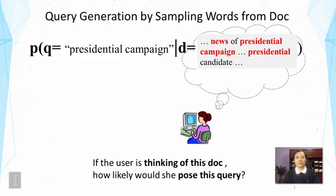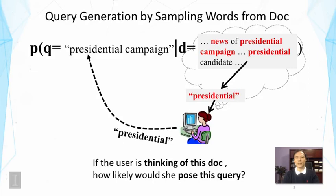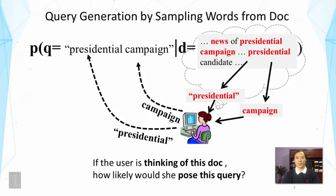For example, a user might pick a word like 'presidential' from this document and use it as a query word, then pick another word like 'campaign' as the second query word. This is an assumption about how a user would pose a query. This assumption allows us to formally characterize this conditional probability and not rely on a large empirical table. The key assumptions are that each query word is independently sampled and each word is drawn from the document.